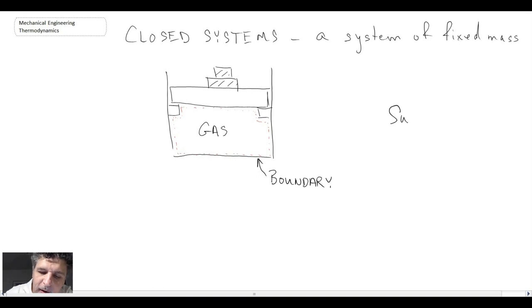And out here, everything outside of our boundary, we will refer to as being the surroundings. Now, with a closed system, you can have a couple of things crossing the boundary, and those are the two things within the first law of thermodynamics for a closed system. If you recall, we talked about heat, so the capital Q, and work.